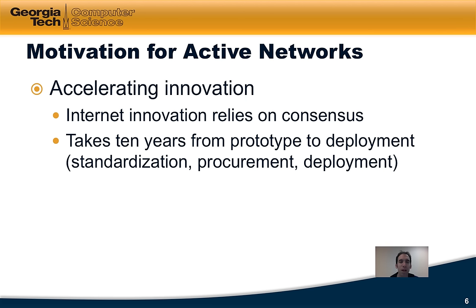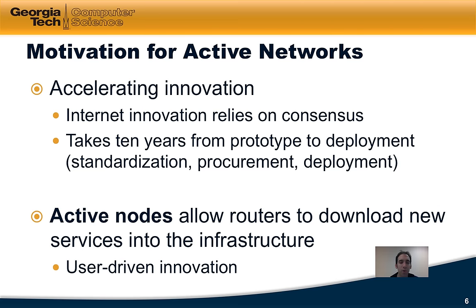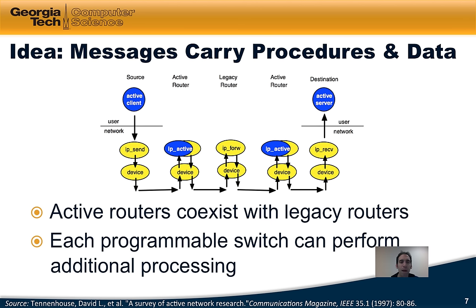Active networks observed that if you could put active nodes in the network where routers could download new services into the infrastructure, that could allow for user-driven innovation. The main idea is that messages or packets would carry both the data and the procedures that might operate on that data. These active routers that perform custom operations might coexist with legacy routers that do nothing more than forward the traffic, while each programmable switch performs additional processing in addition to forwarding.